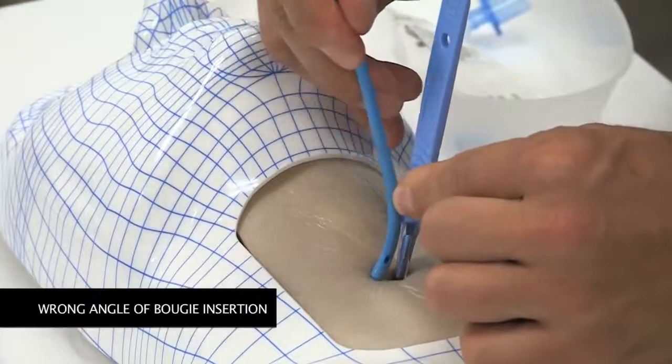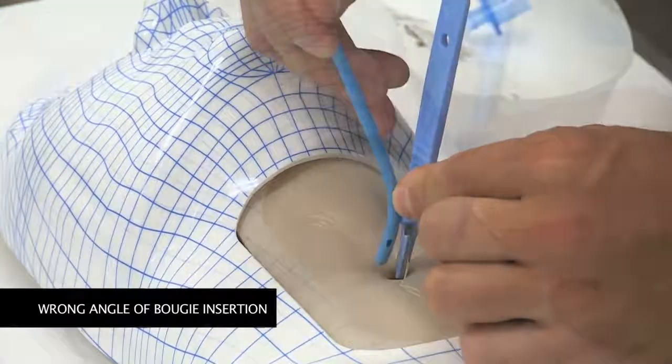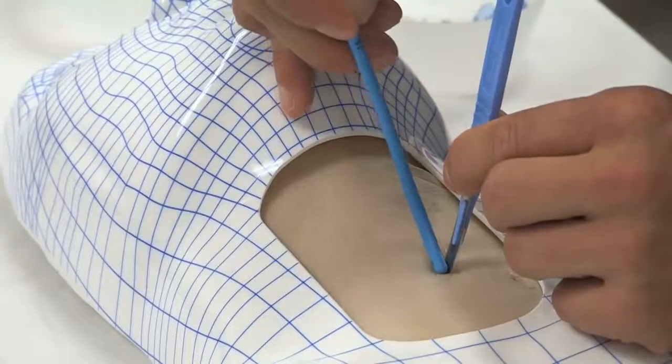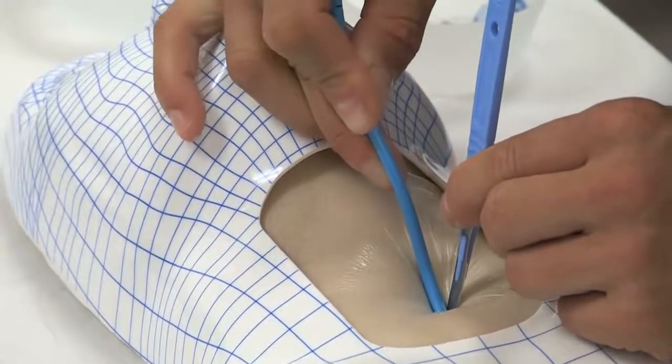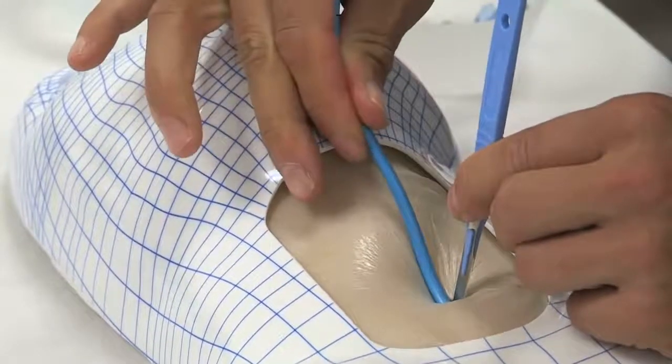Bougie insertion, other than in the horizontal fashion with the tip touching the scalpel blade, can make the bougie tip go into a paratracheal plane and may result in paratracheal insertion of the bougie.